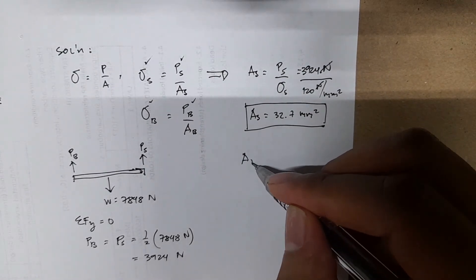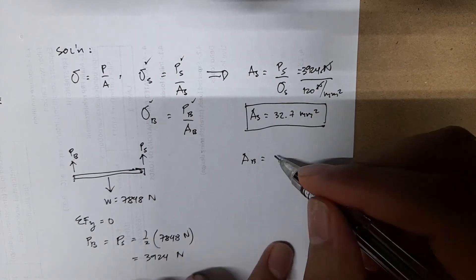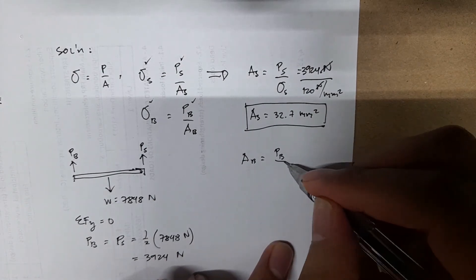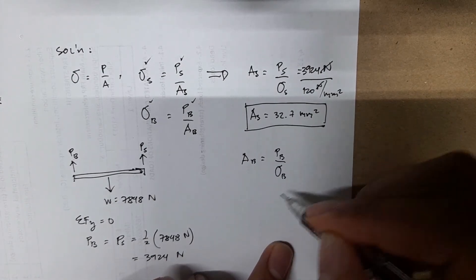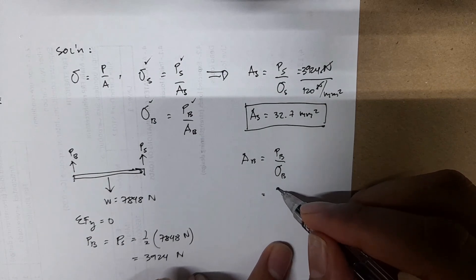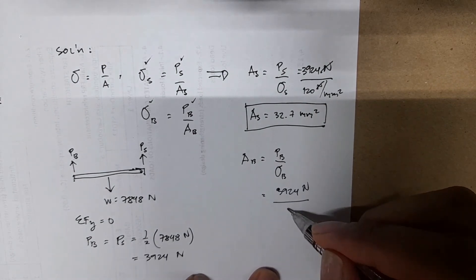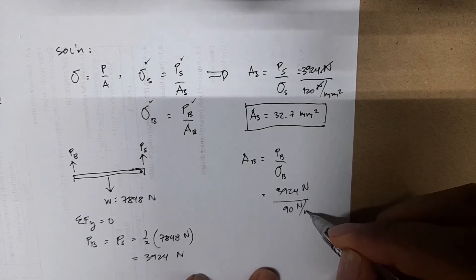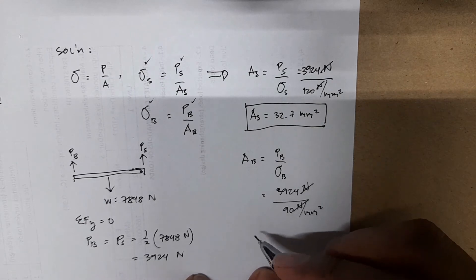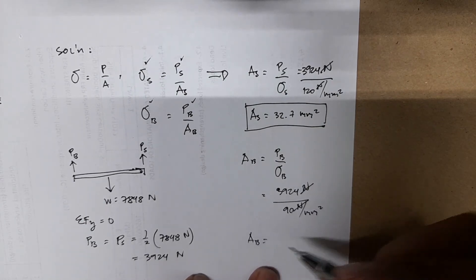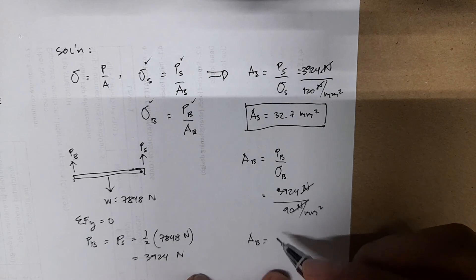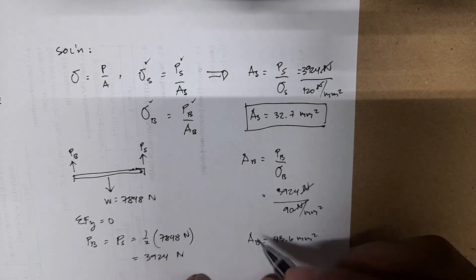So this is the required area for steel. Similar procedure - we have the area for bronze, PB over sigma B, 3924 divided by 90 newton per - this one cancels out, the mm goes to the numerator. We have AB equals 43.6 millimeters square.